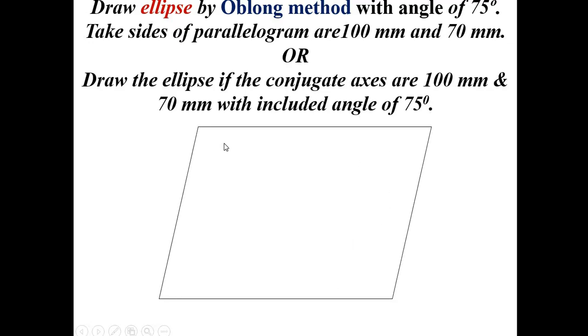First, draw the parallelogram with the given angle of 75 degrees. The horizontal line is 100 mm and the incline line is 70 mm. Start with a horizontal line of 100 mm, then at 75 degrees, draw the incline line as 70 mm.